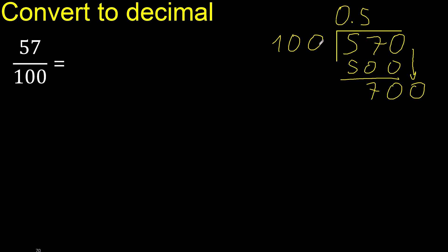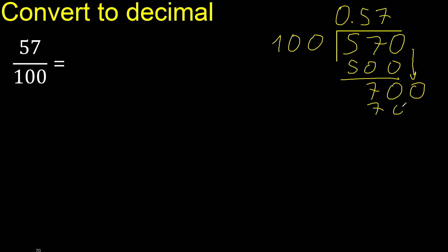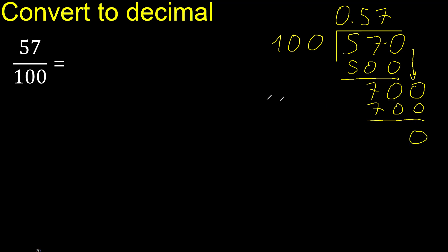700. 100 multiplied by which number? Multiplied by 8 is 800 — is greater. Multiplied by 7 is 700 — ok. Subtract 0. Therefore finish.